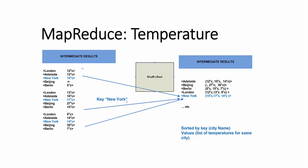For example, the intermediate results for New York will all get sent to the same reducer. The intermediate results are shown on the right. Data for New York contains a list of temperatures for the city over a given time period which was filtered out earlier.